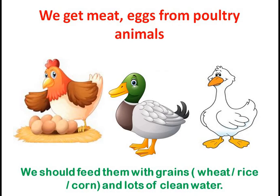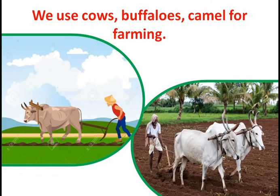We get eggs and meat from poultry animals like hen, duck and goose. In return we have to feed them with grains — like wheat grains, rice or corn — and give them lots of water. Cows, buffalo and camel are used for farming, so we give them clean shelter and do not overload them with work. This way both are satisfied.